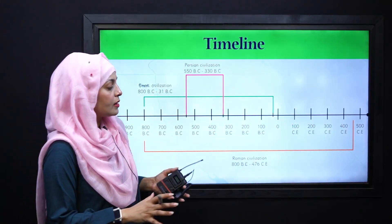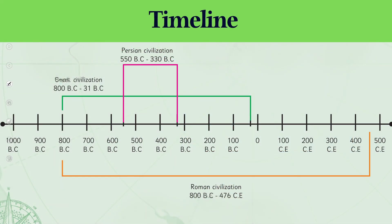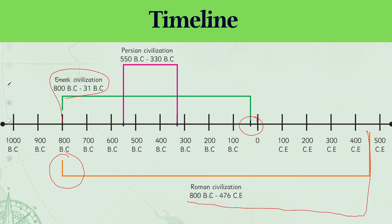My dear students, this is the complete timeline. If you look at it carefully and understand it from now, you will see that this is the era from which Greek civilization began, and from here you can also see that Roman civilization also began — but it had not flourished as much by that point. And over here, Greek civilization ended. But Roman civilization continued much further ahead. And during both these civilizations, another civilization was also seen — the Persian civilization, which lasted from 550 BC to 330 BC.